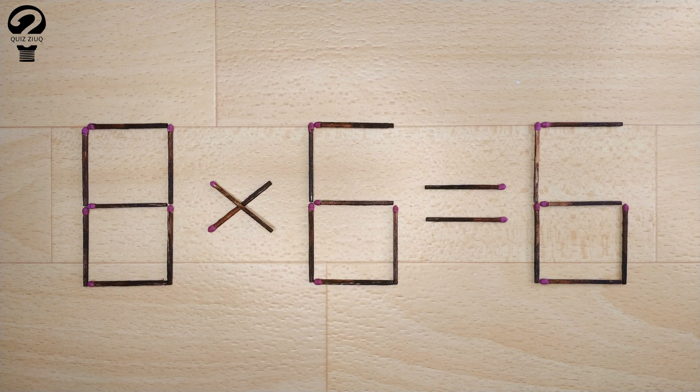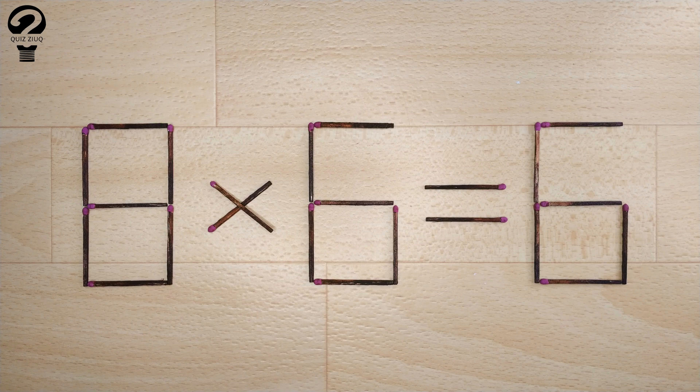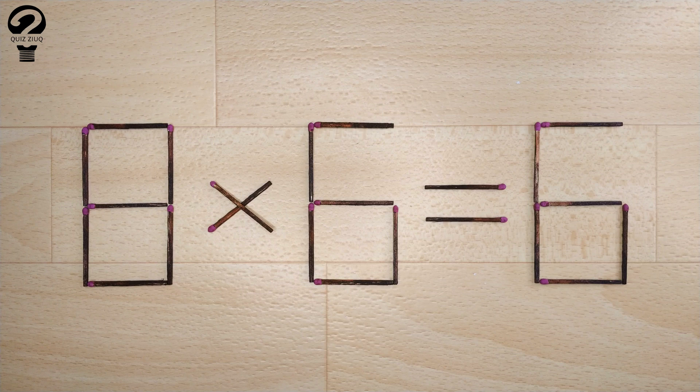Here's the next puzzle. We have the following equation: 8 times 6 equals 6. Our equation is incorrect, and we need to move two matchsticks to make our equation correct.